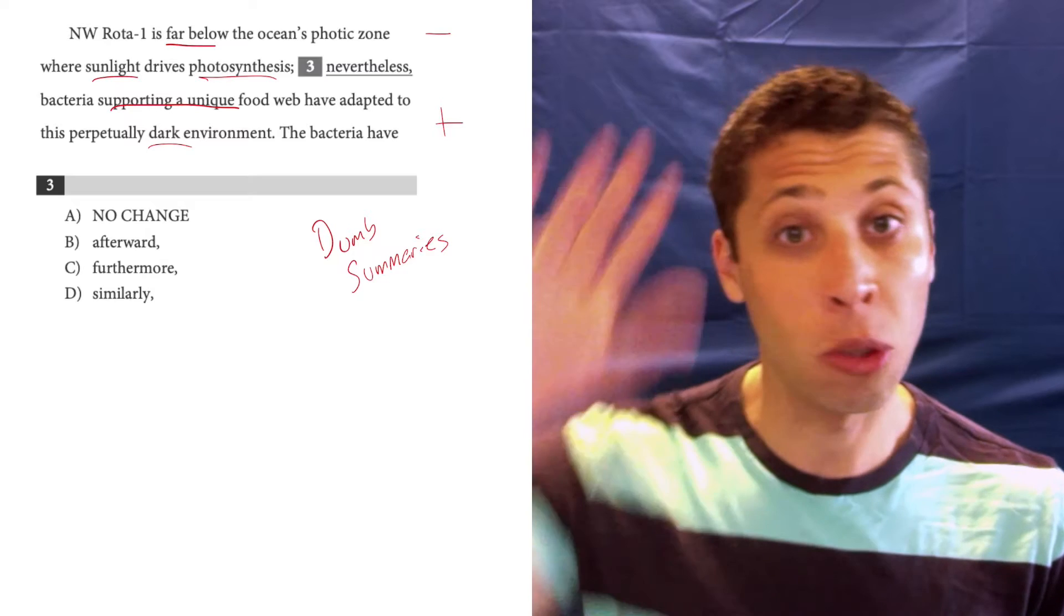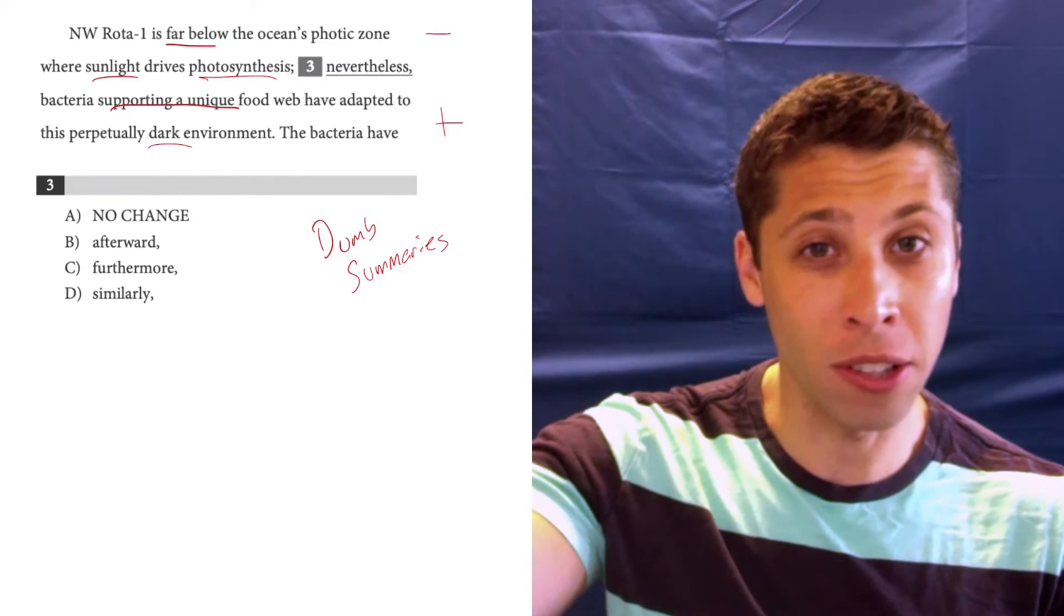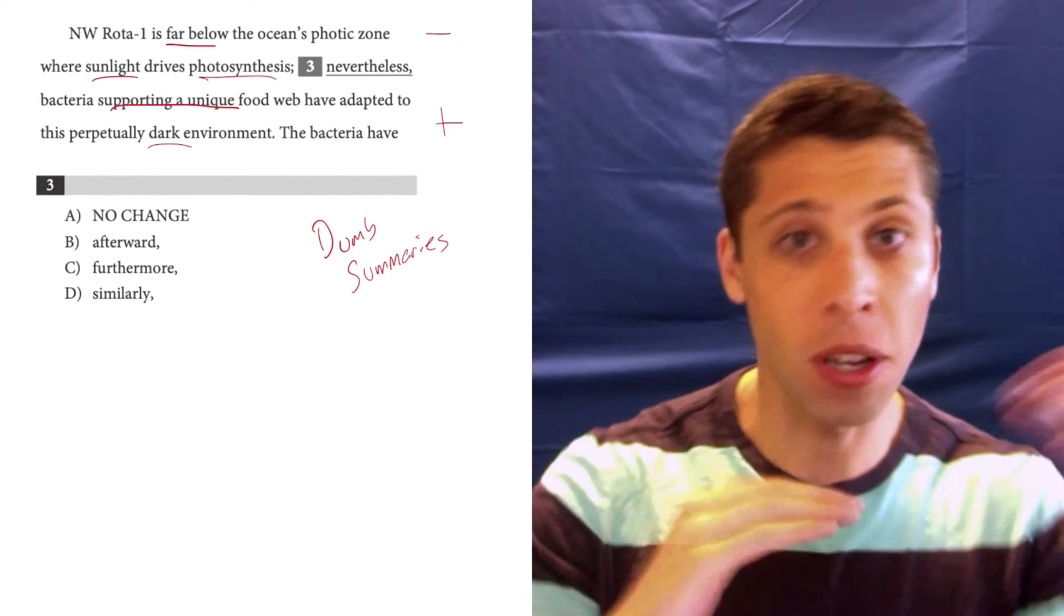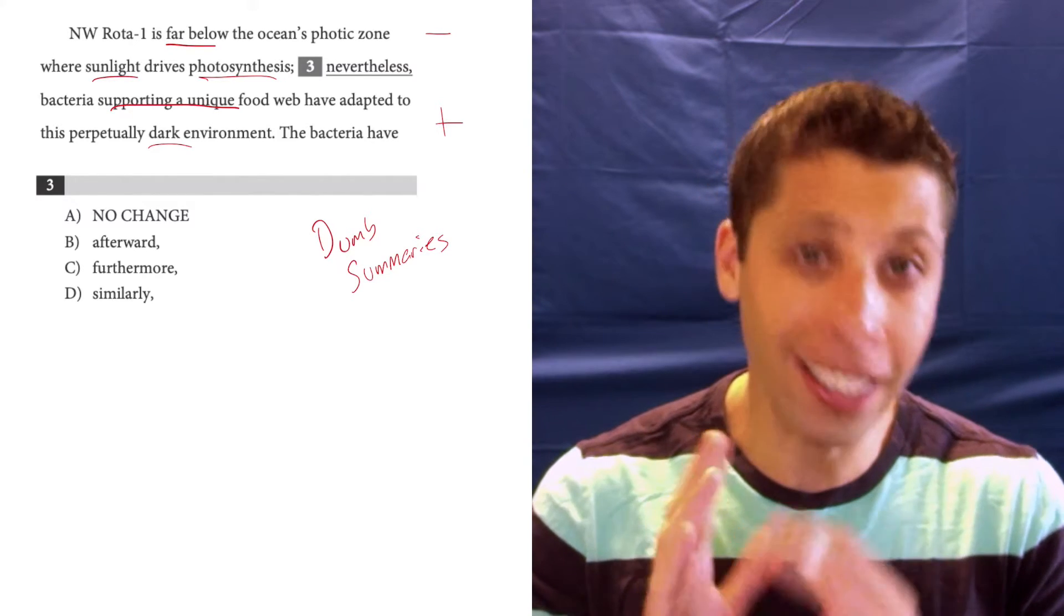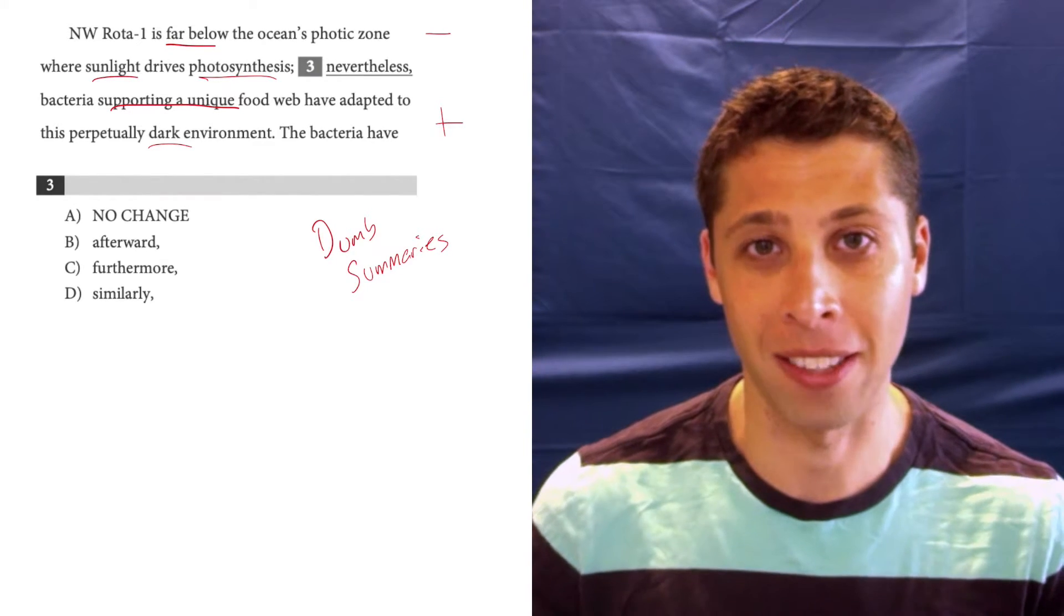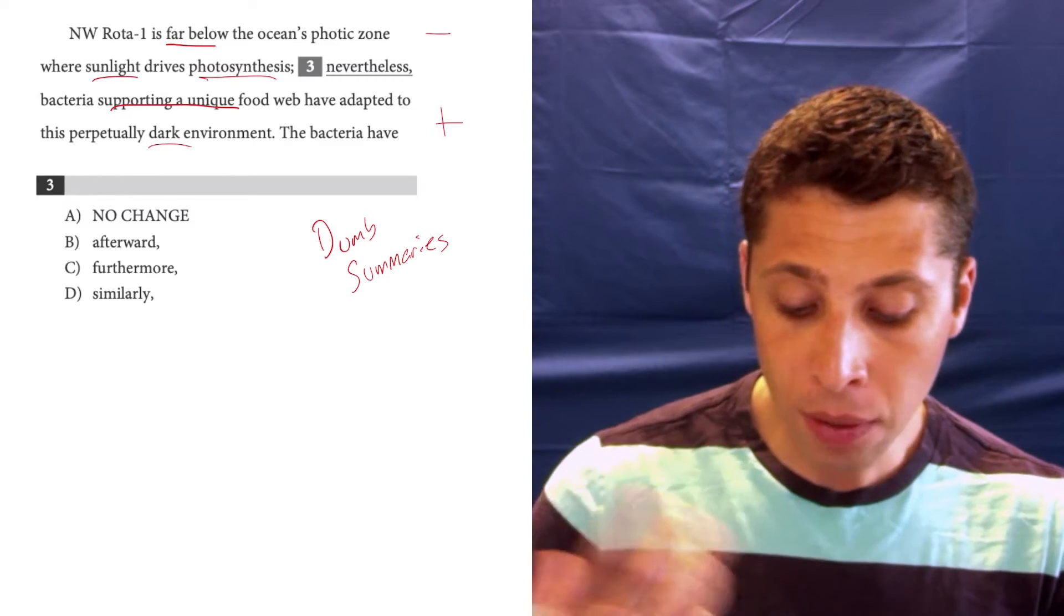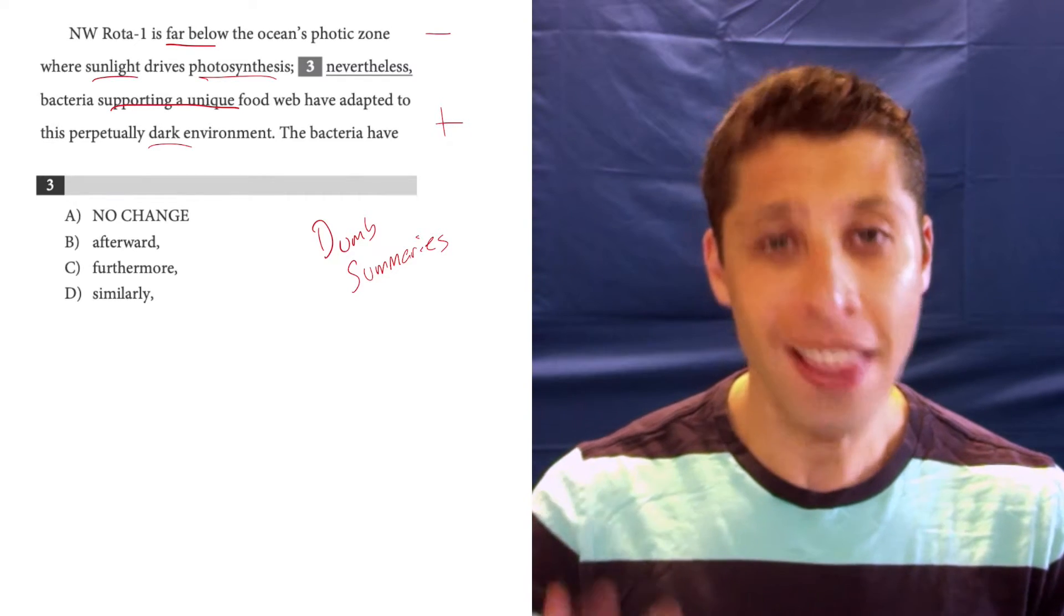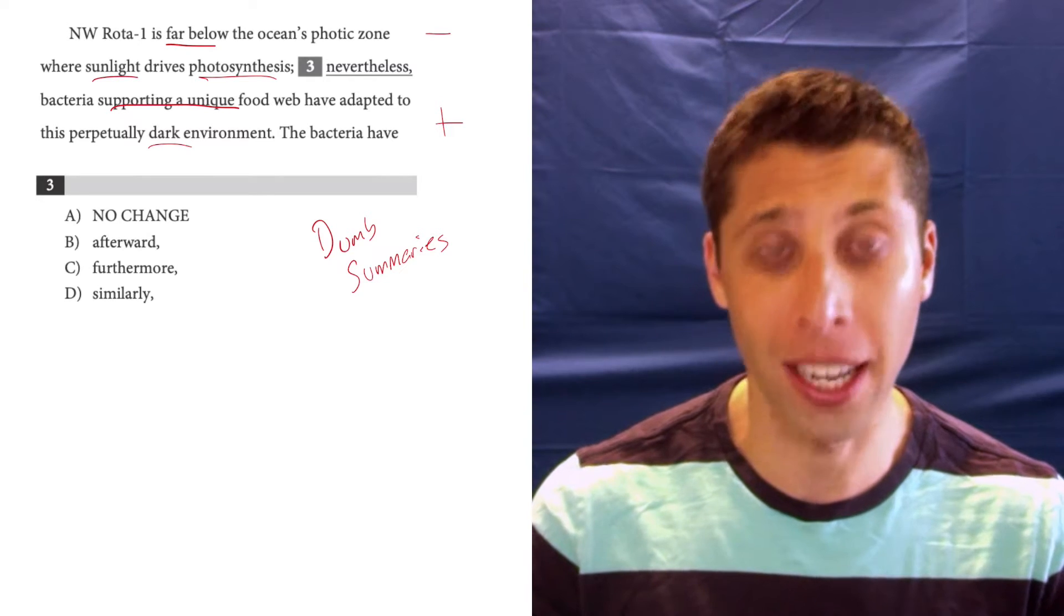So there's a clear contrast between sunlight and darkness and between kind of being out of the zone and adapting to it anyway. So there's a contrast. And you might say negative, positive, but at least there's some sort of contrast in the sentence. So we're looking for a contrast word. And even though these are words that we don't normally use when we talk to our friends, they all correspond to normal words. That's what the dumb summary idea is about.